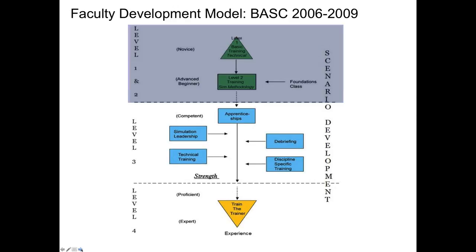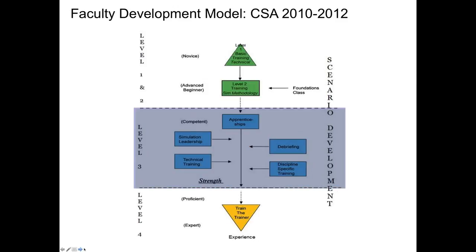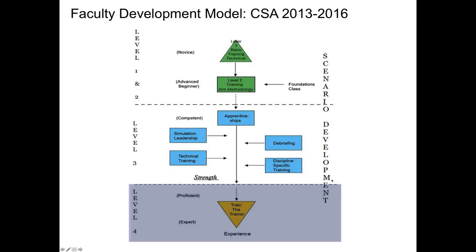From 2006 to 2009, the Bay Area Simulation Collaborative created this model focused on building competence. From 2010 to 2012, the California Simulation Alliance enhanced this competence through level three training and built a critical mass of educators around the state of California. From 2013 to 2016, the focus has been on training the trainer, and there are now approximately 20 trainers in the state. At the University of San Francisco, we've adopted this model and created standards and criteria for all simulation faculty — anyone who teaches in simulation in our center has to meet certain criteria, which ultimately benefits the student and keeps everyone standardized.